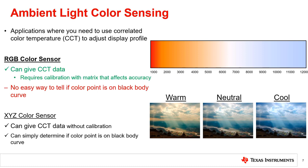The RGB color sensor, because there is no universal standard, often requires some sort of calibration to convert the RGB values to CCT. Some manufacturers provide a matrix or a simple linear equation to convert to CCT, but these vary in accuracy. In addition, non-white light will often get mapped to the closest CCT and provide invalid results. In an RGB color space, there is no easy way to determine if the color point should be mapped to the CCT or not.